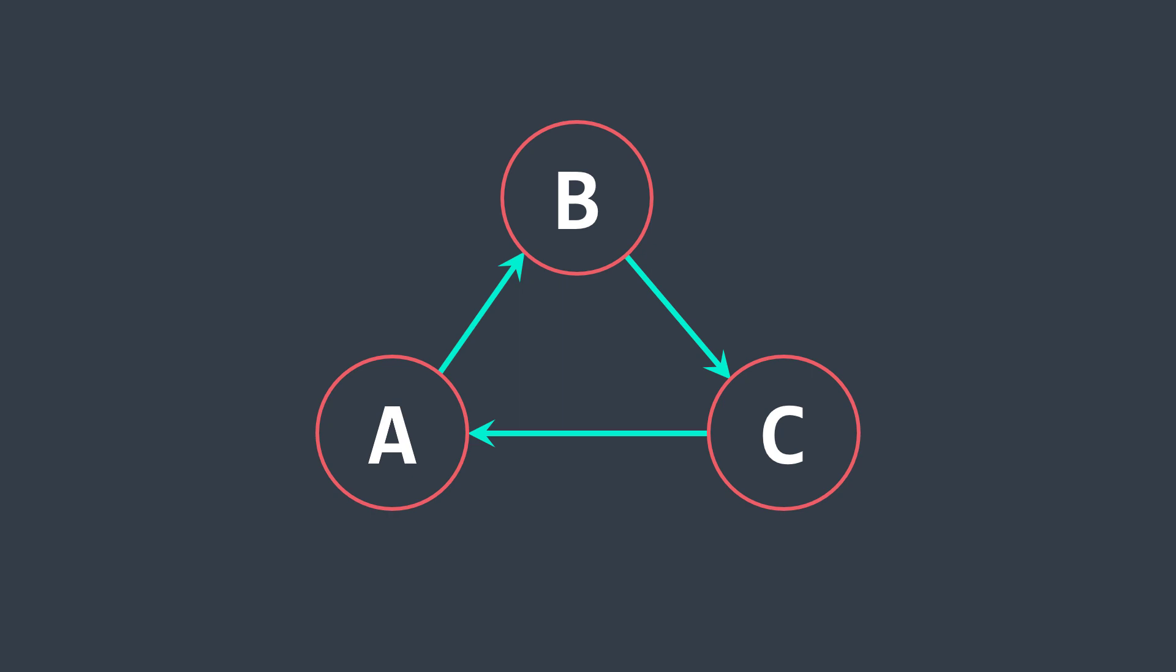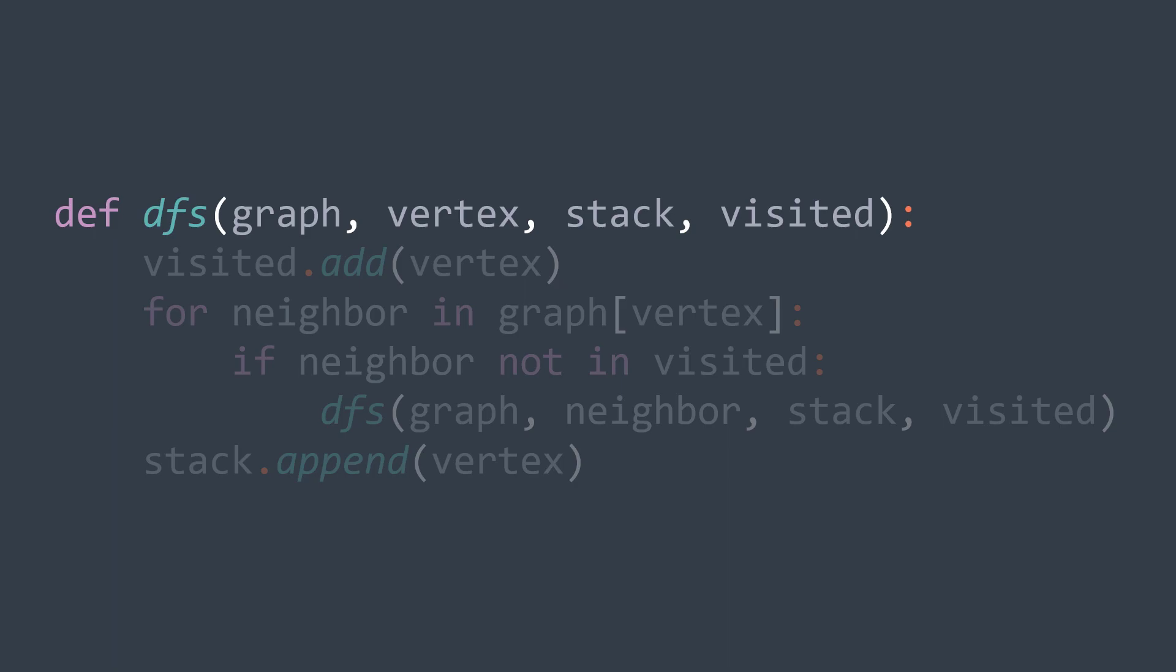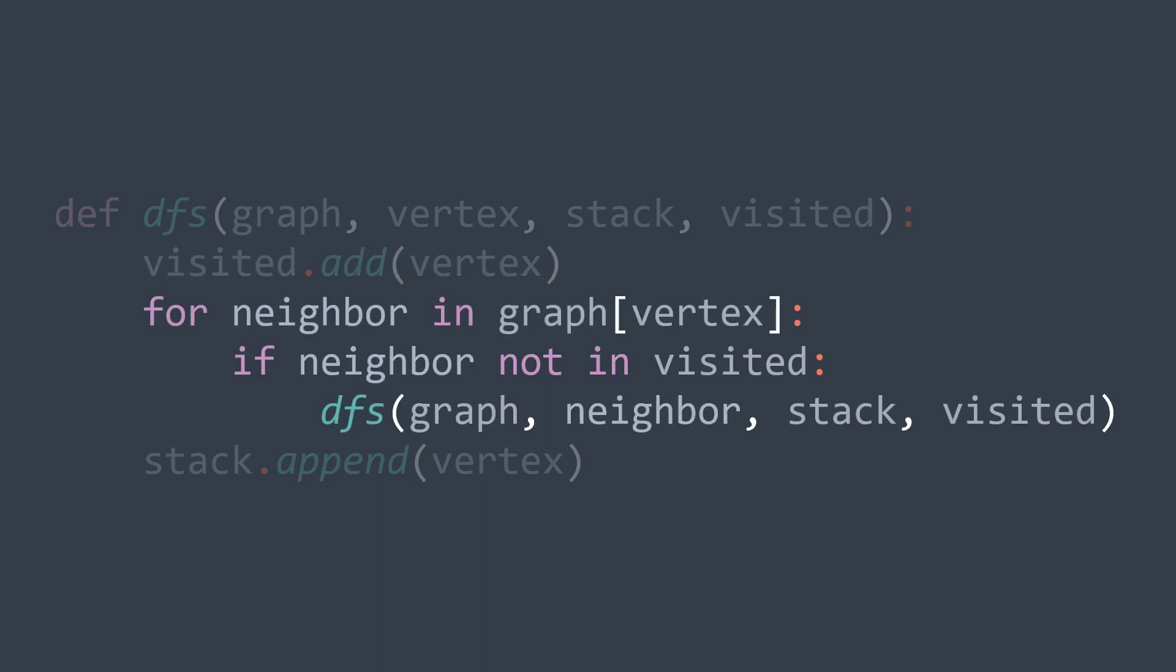Let's move to the code. We first need the recursive function to perform the depth first search traversal. It takes as parameters the graph, the actual vertex, the set of visited vertices and the stack. We first set the actual vertex to visited, then we visit every neighbor. To do so, for each neighbor if it's not visited, recursively call the function on it to visit it.